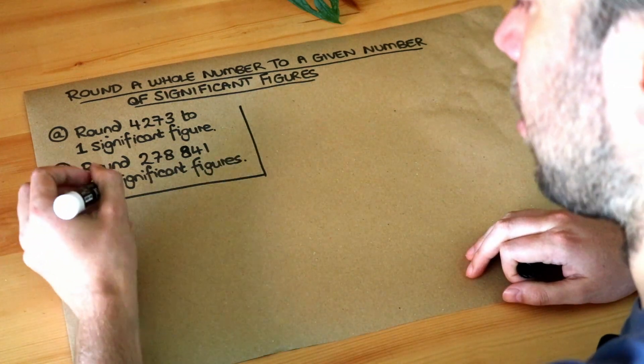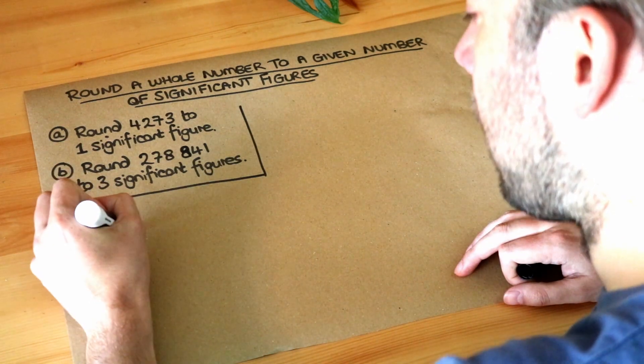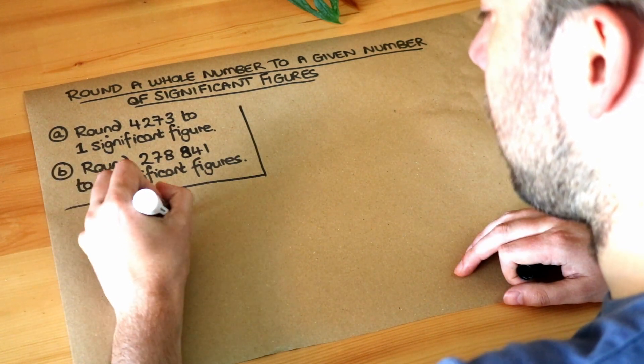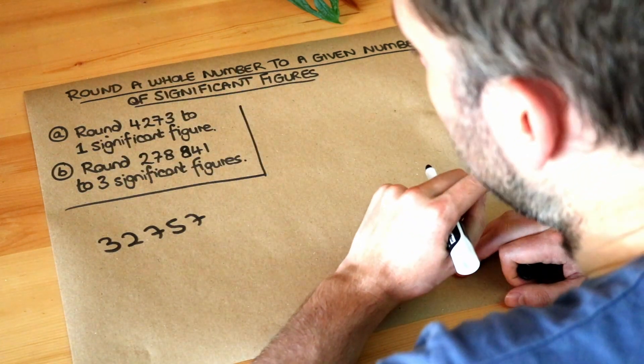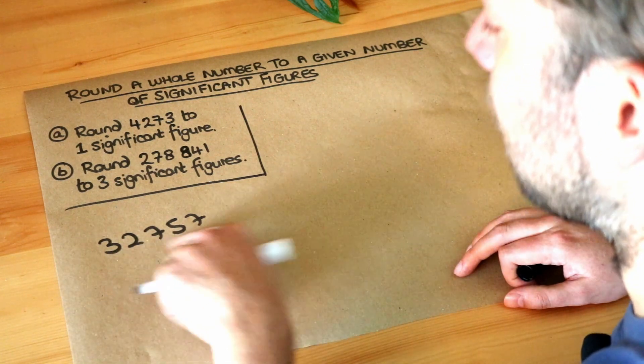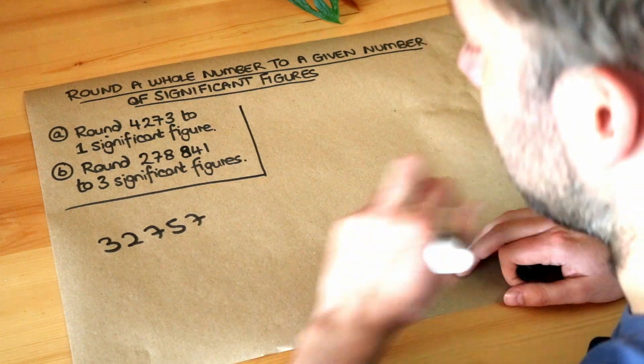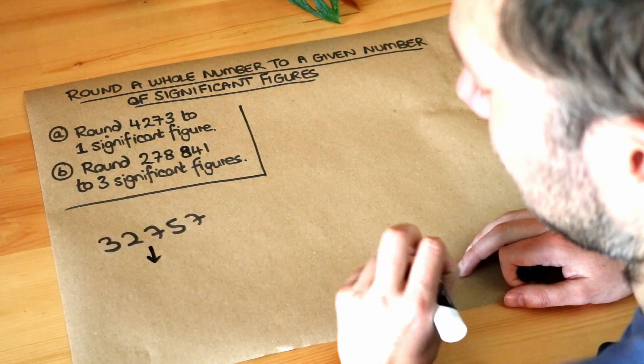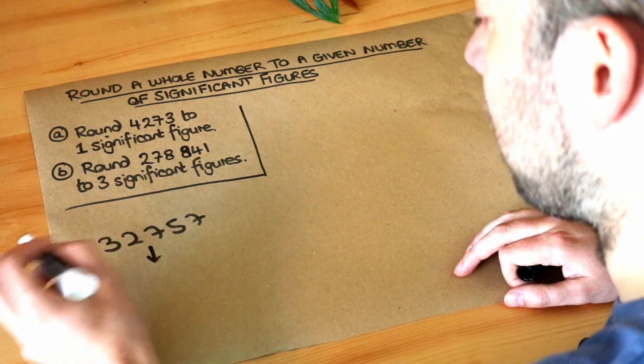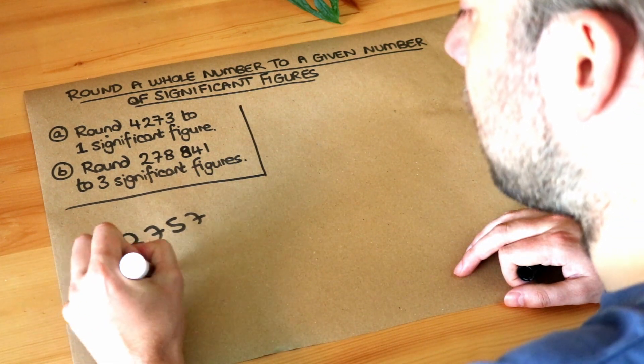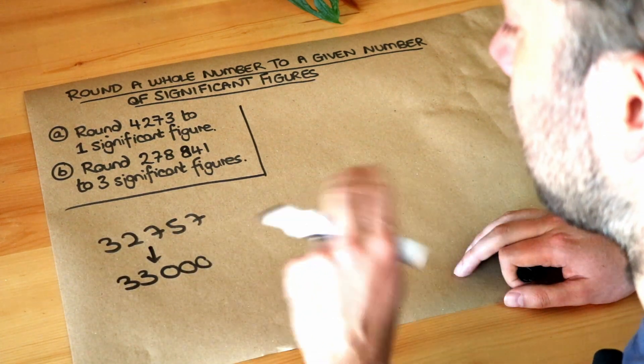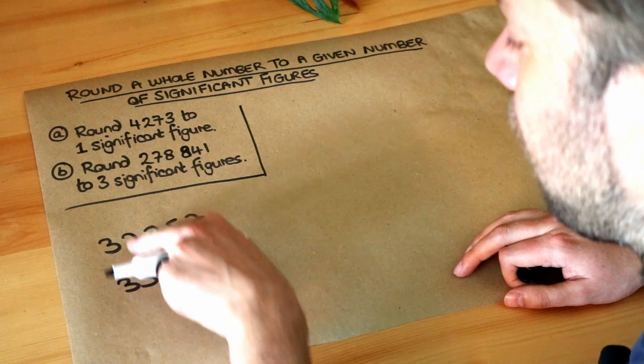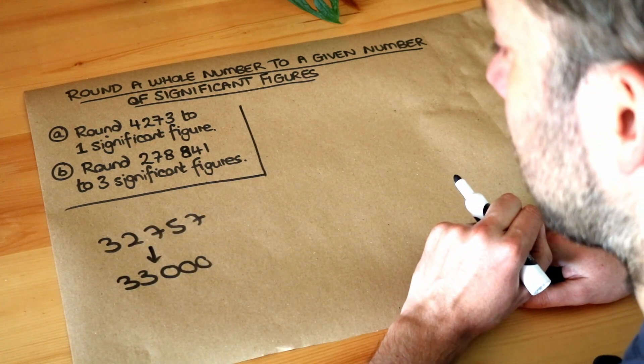Let's just say for example you had 32,757 people in a football stadium. If you were describing that in a newspaper article you wouldn't say there's 32,757, you'd probably round it to some suitable degree of accuracy. So for example you might round to the nearest thousand and say well there's 33,000 people in the stadium. It's just a simpler number but still is roughly equal to what the original number was.